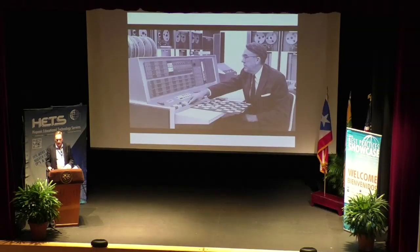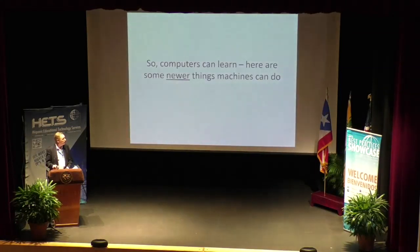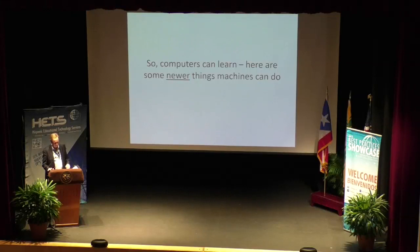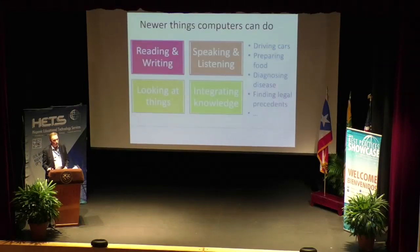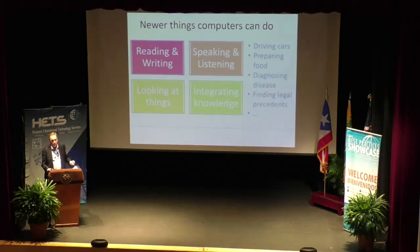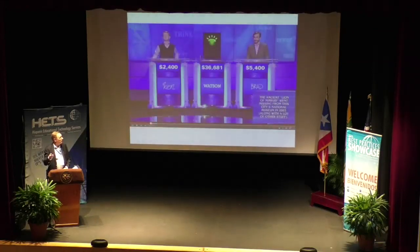We've gone on and done this again and again. Machines can learn — they can learn how to do things. Some of the things that machines have learned how to do include reading and writing, speaking and listening, looking at things and integrating knowledge. A good example of this was Watson. How many people remember Watson on Jeopardy?